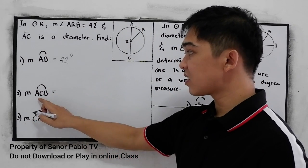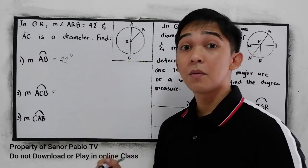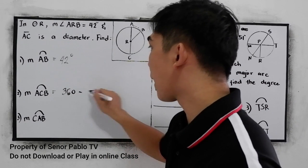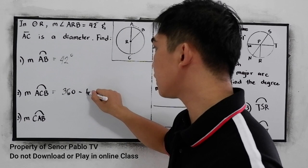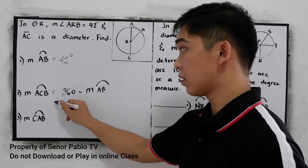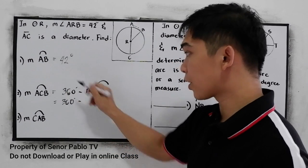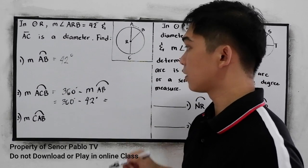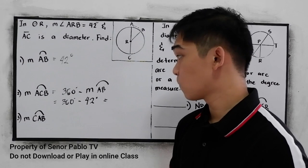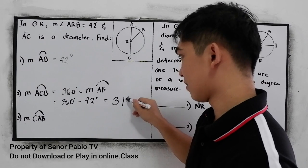Next, find the measure of arc ACB. ACB is our major arc. Using the formula: 360 minus the measure of minor arc AB, which is 42 degrees. So 360 degrees minus 42 degrees equals 318 degrees. So the measure of arc ACB is 318 degrees.